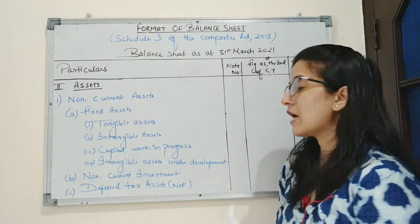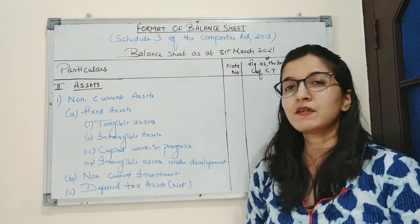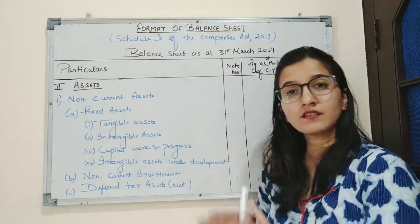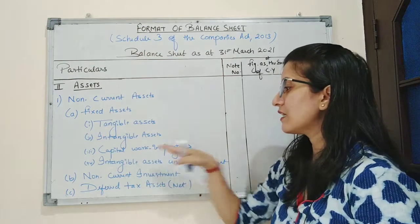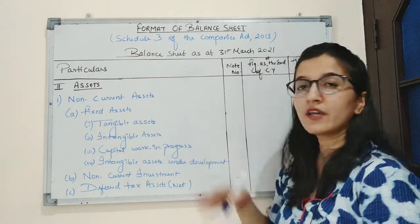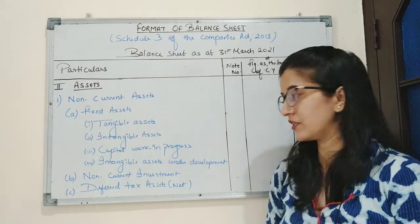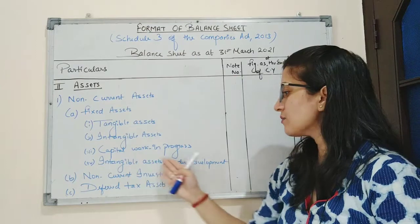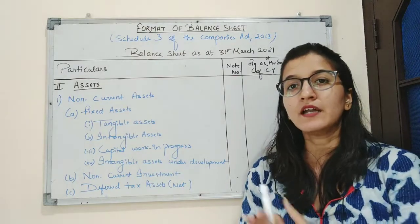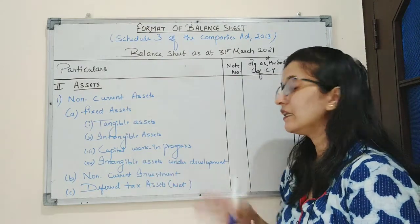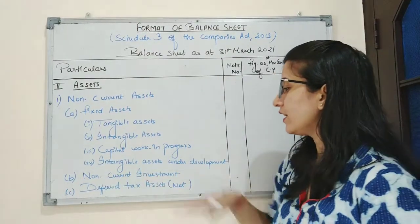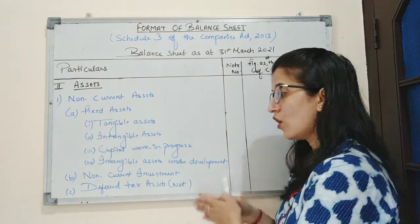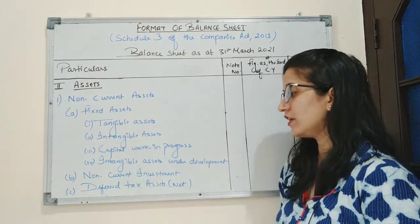Third is capital work in progress. Capital work in progress means, for example, if a company has purchased a building but that building is still under construction, we can say that building is in work in progress — so it is an example of capital work in progress. Fourth is intangible assets under development, which means a trademark has been applied for but has not yet been legally accepted. Next is non-current investment — investment which has been made for a long duration.